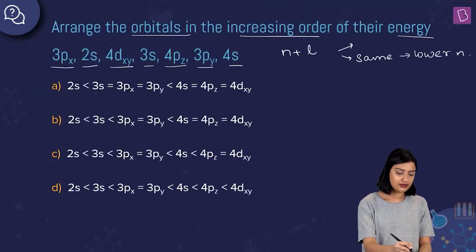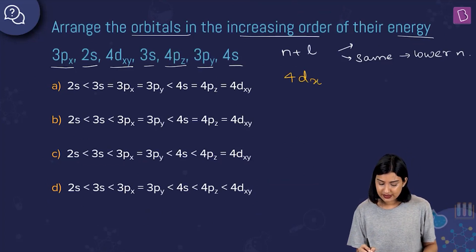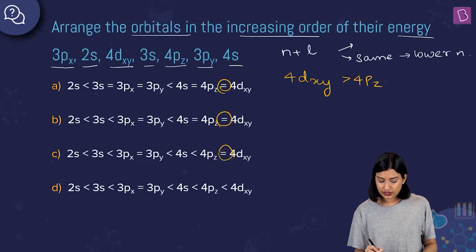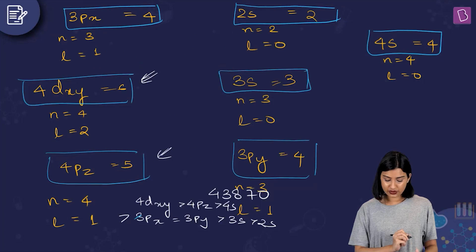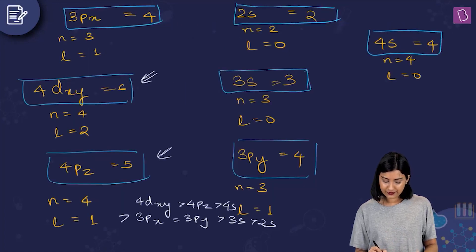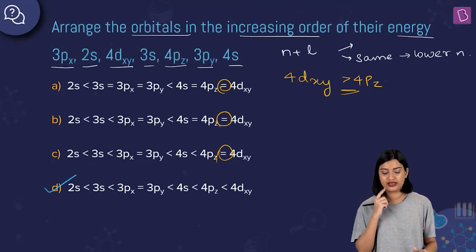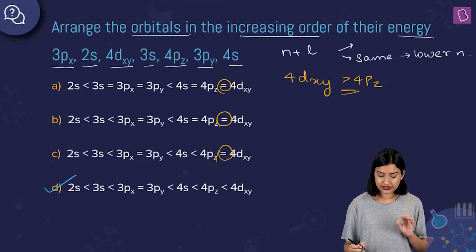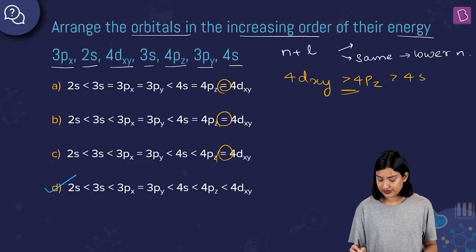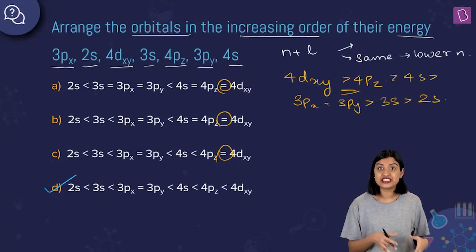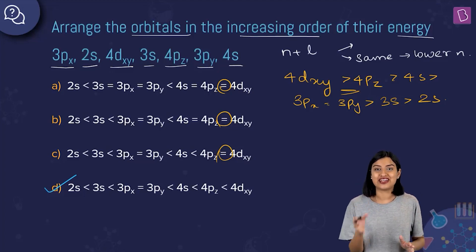The full order is: 4dxy > 4pz > 4s > 3px = 3py > 3s > 2s. Checking the options, all options show these as 'greater than' relationships, and the order matches option D exactly, so option D is the correct answer.